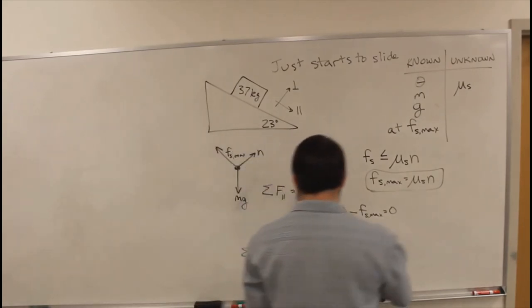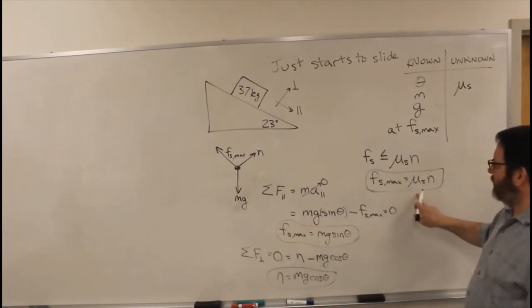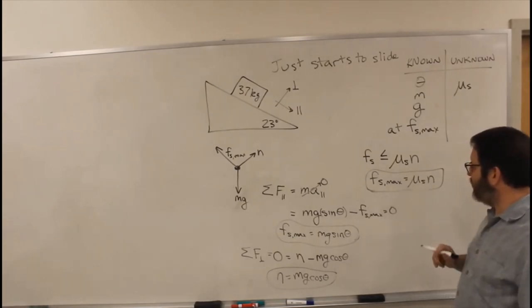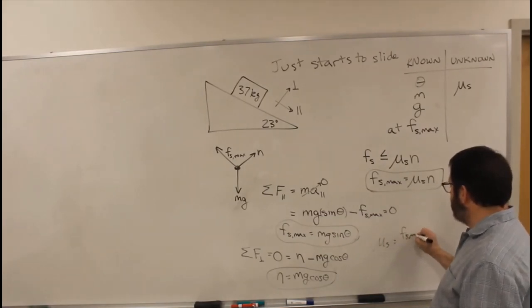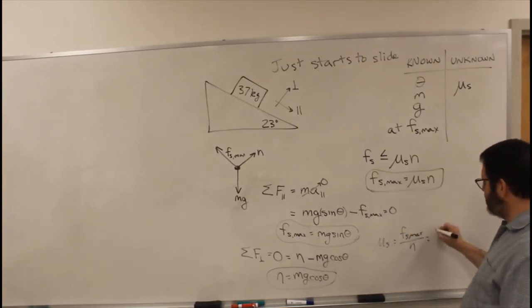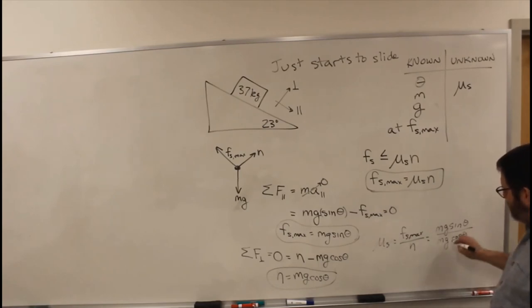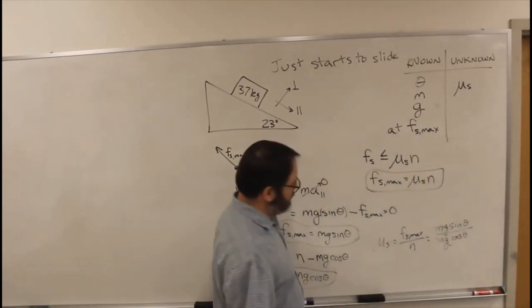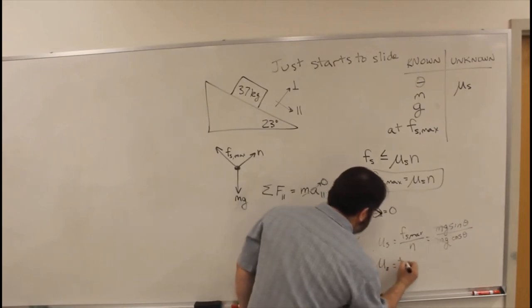All right, now we know this. We know this, we know that. We can put them all together to find mu s. Because mu s equals Fs max over n. So that is mg sine theta over mg cos theta. Those cancel. Mu s is just sine theta over cos theta. And sine over cos is tangent. So mu s equals tangent of theta.